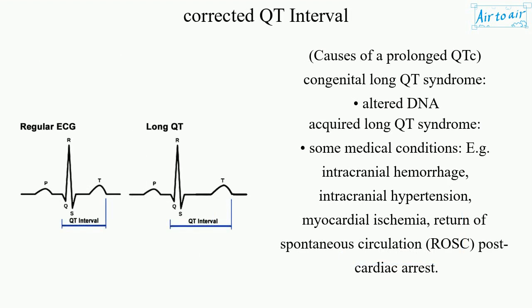Causes of a prolonged QTc: congenital long QT syndrome (altered DNA), acquired long QT syndrome. Some medical conditions, e.g. intracranial hemorrhage, intracranial hypertension, myocardial ischemia, return of spontaneous circulation (ROSC), and post-cardiac arrest.